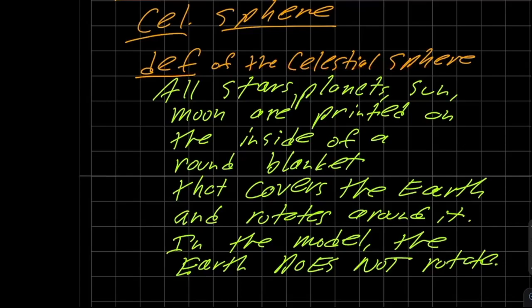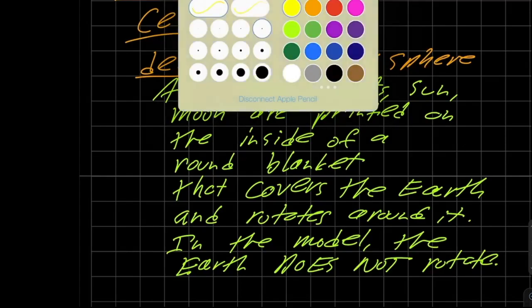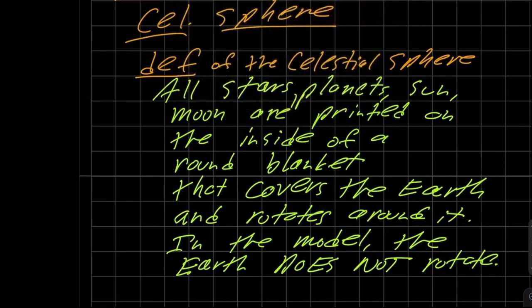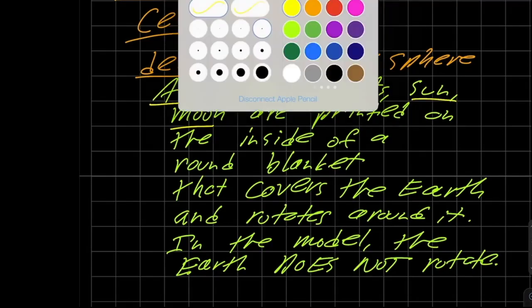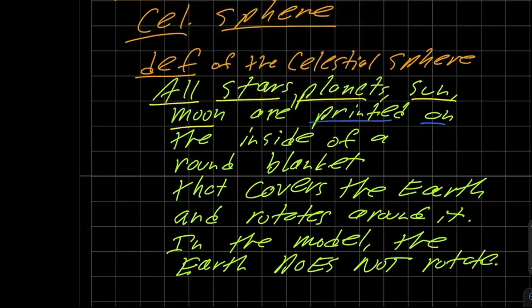And we came up with the definition of it. And we're going to say for the purpose of this definition here, that the Celestial Sphere is something that sort of contains all stars, planets, the sun and the moon. And we're just going to sort of pretend that all these objects are printed on the inside of a round blanket.